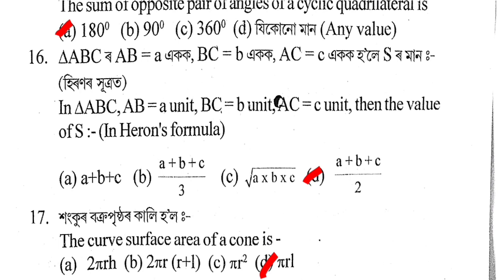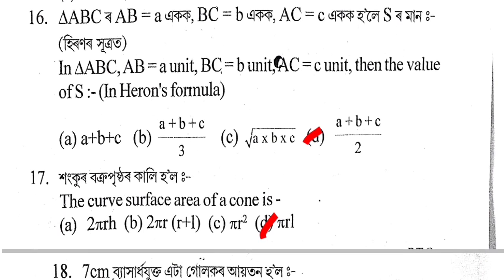Next question: In triangle ABC, AB equals a, BC equals b, AC equals c — using Heron's formula, find the semi-perimeter s. The correct answer is Option D.